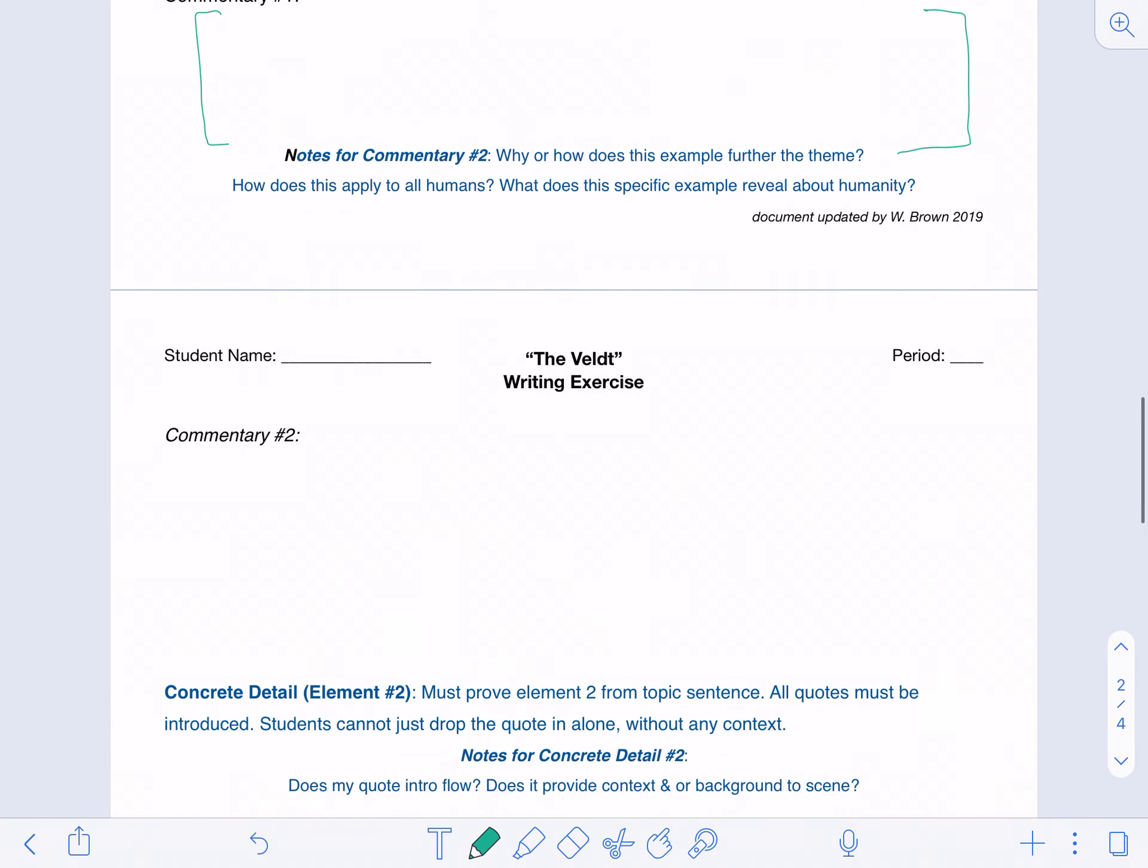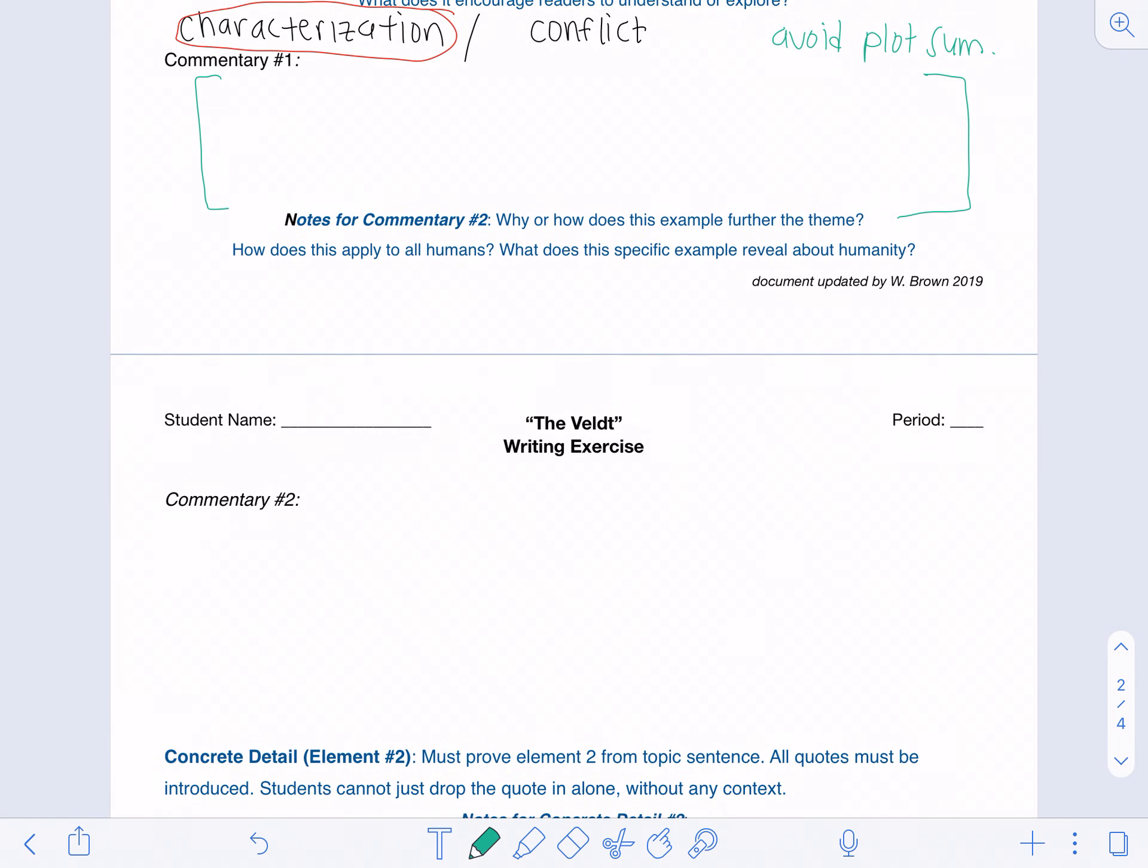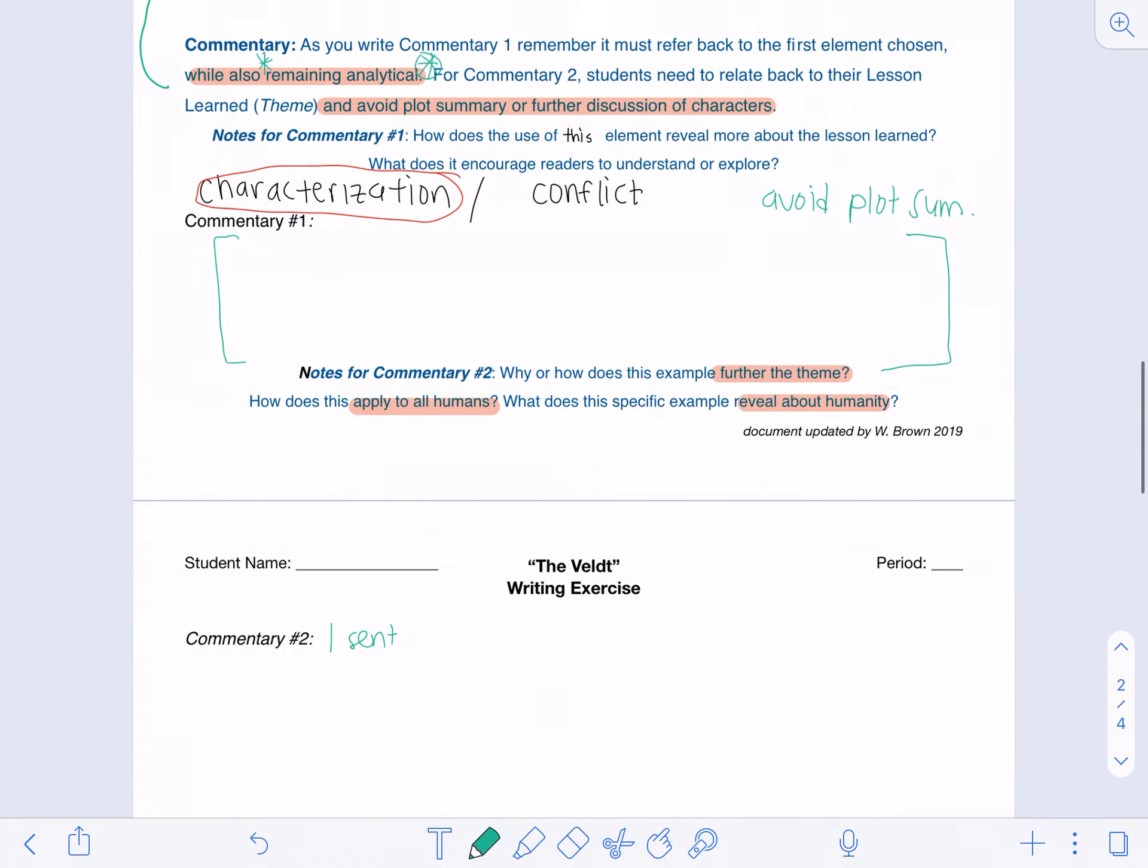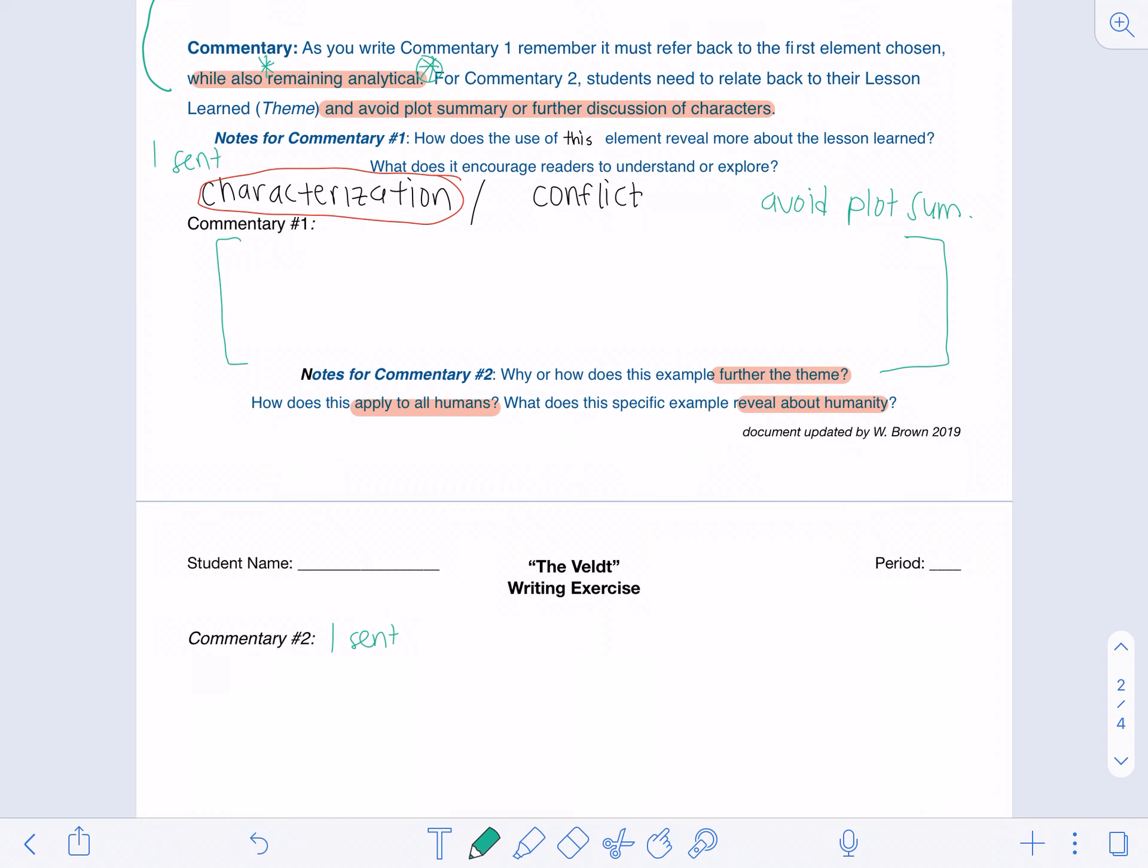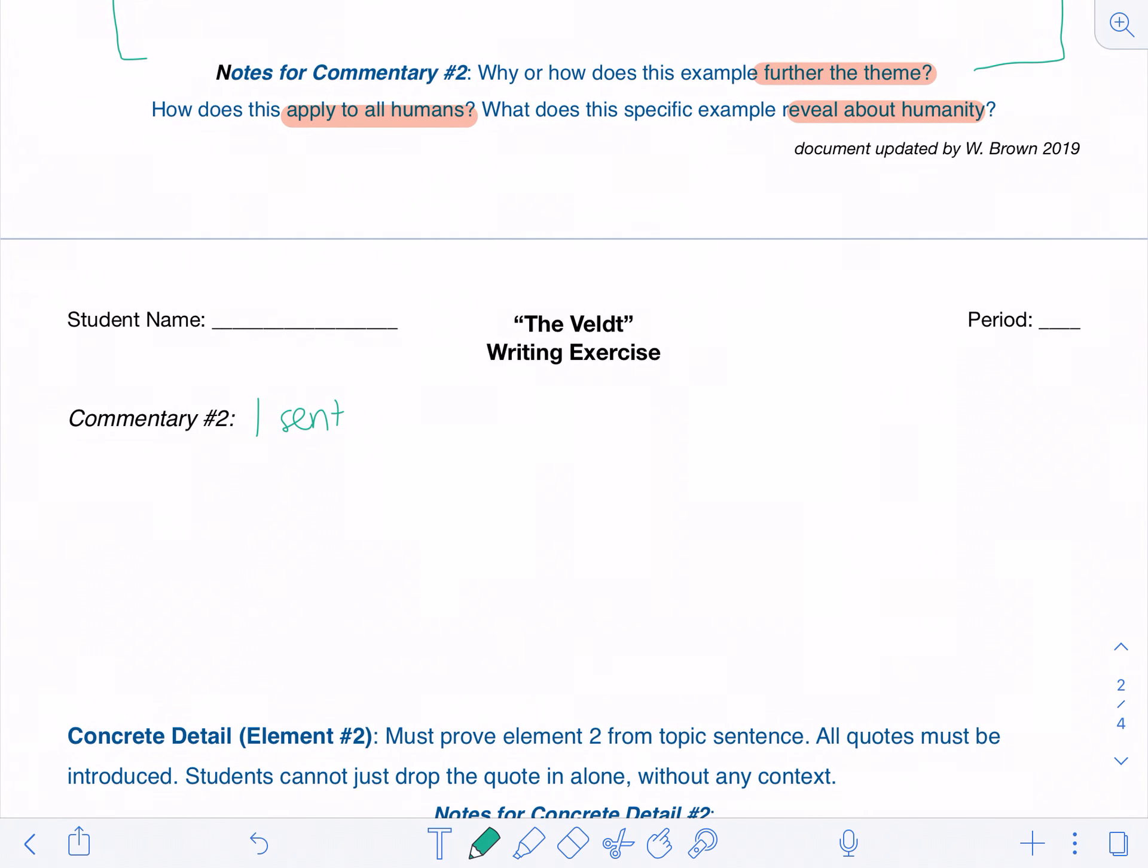Commentary two: How does it further the theme? What does it apply to all humans, and what does it reveal about humanity? Now both of the commentaries are only one sentence, but I try to give you questions that if answered correctly give you the correct analysis. So when doing your commentary two, you want to keep it universal and analytical, and just like commentary one, we are avoiding all plot summary.